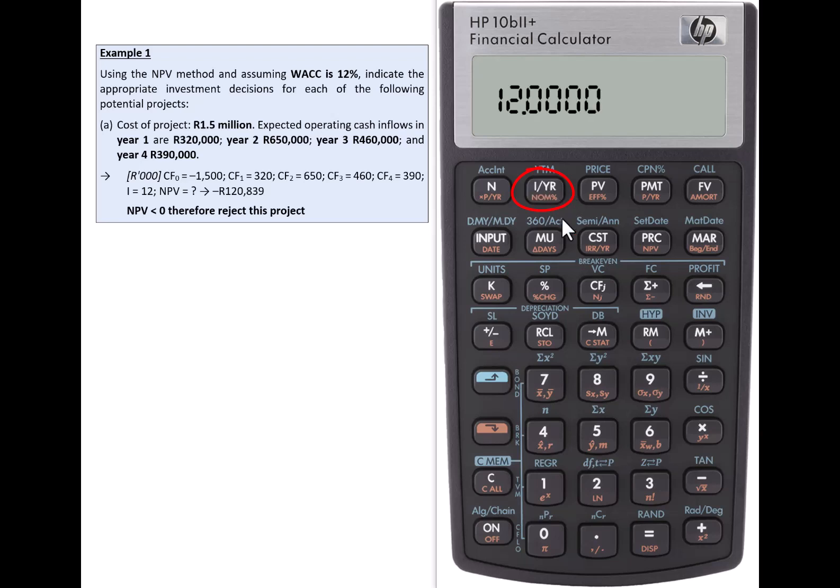And finally, we calculate the project net present value. To get this to agree with the solution on the left-hand side, we multiply it by 1,000 because we were working in units of 1,000 and we see exactly the same negative net present value of 120,839 rand rounded for the project. The project would then be rejected.